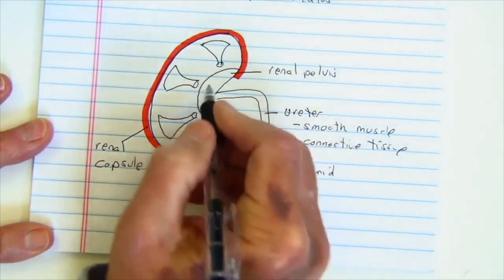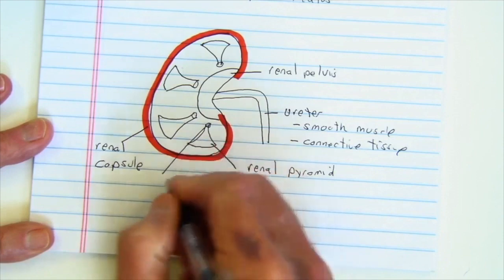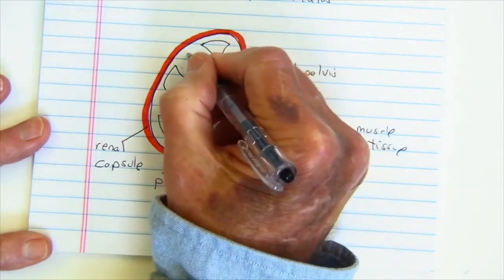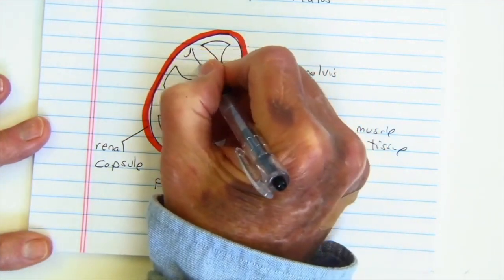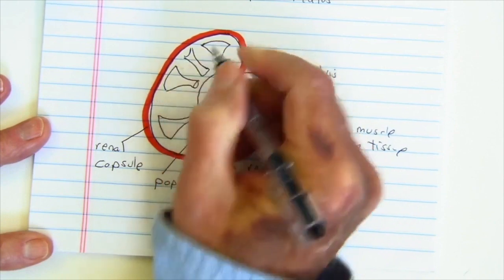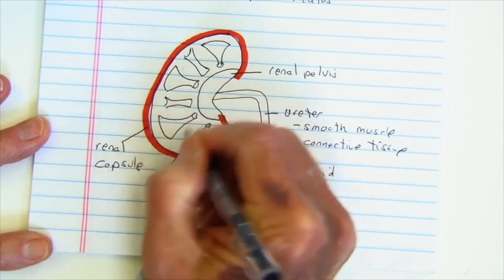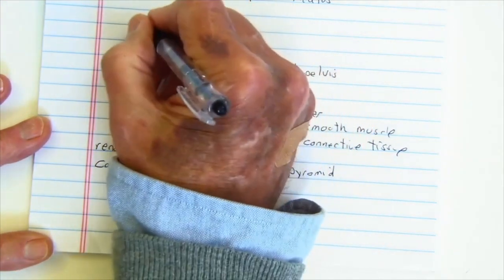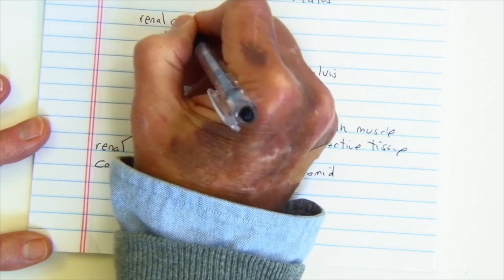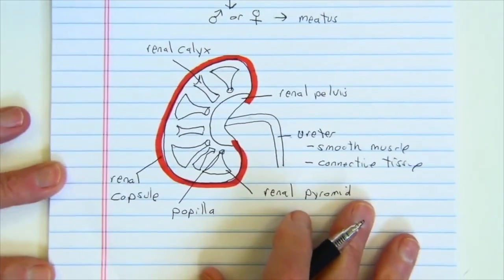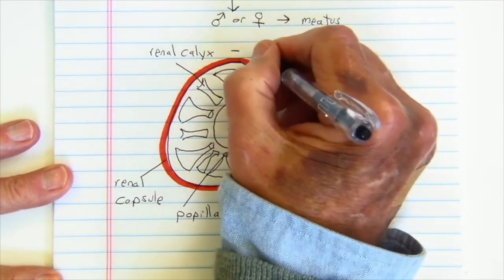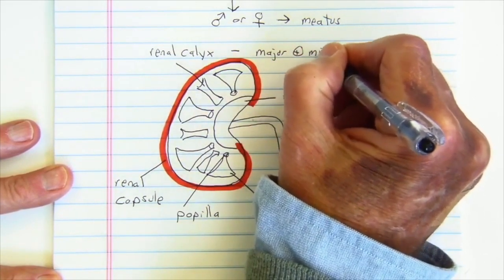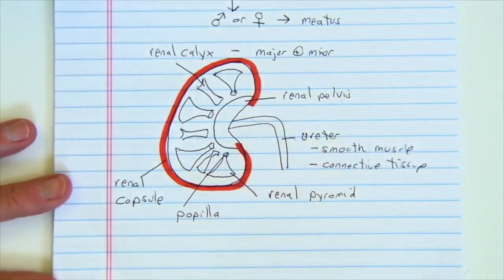At the base of each one of these pyramids you'll see an opening called a papilla. Located between each of these pyramids is going to be a structure called a calyx or calyces — each one called a renal calyx. There are major calyces and minor calyces, based upon their caliber or opening.